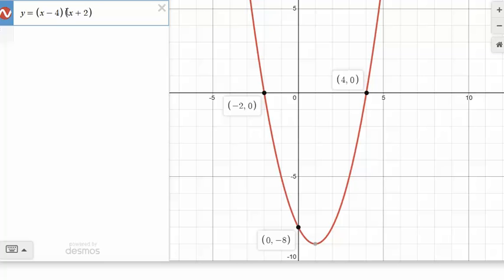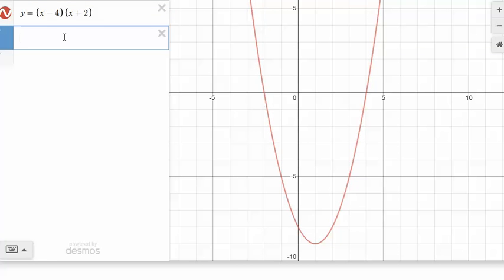If I foiled this or multiplied this out, I would see my constant term is -8. If I multiply this out, I get x² - 2x - 8. That would be my graph right there with a y-intercept of -8.